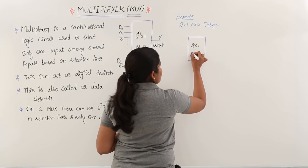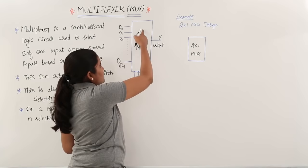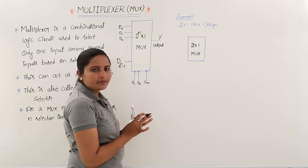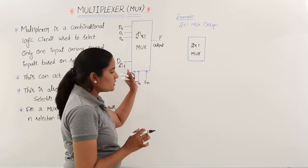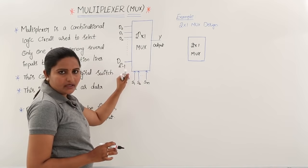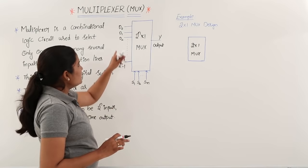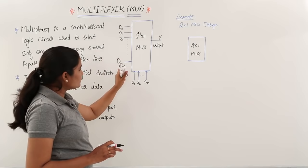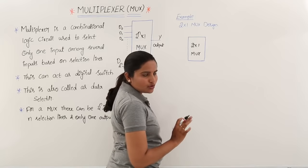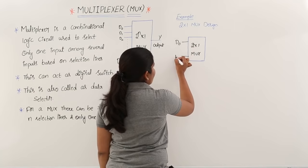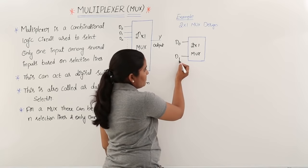For a 2:1 MUX, the number of inputs comes from the 2-power-n value. You have 2-power-n inputs from D0 to D(2-power-n minus 1) — for example, if you have 8 inputs you label them 0 to 7. Here you have 2 input data lines, D0 and D1, since 2 minus 1 equals D1.